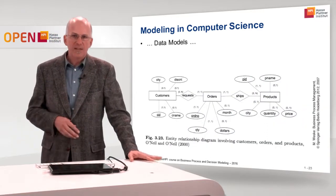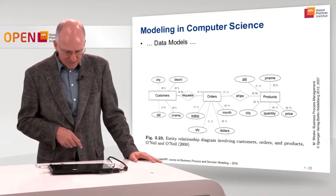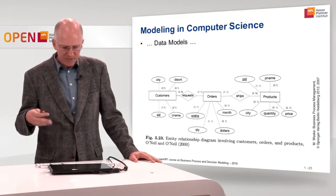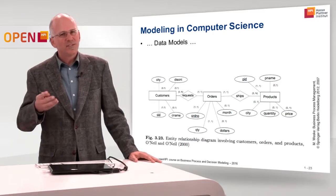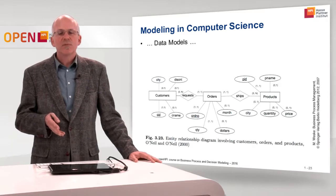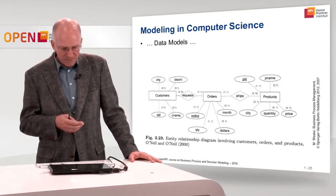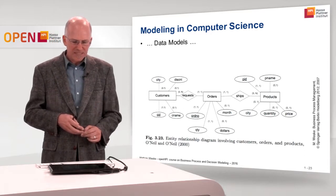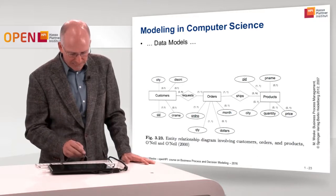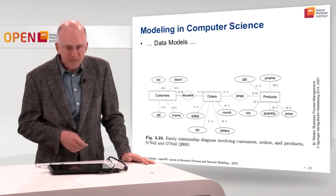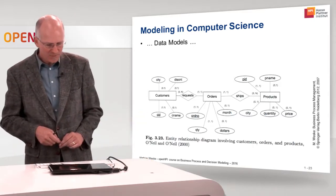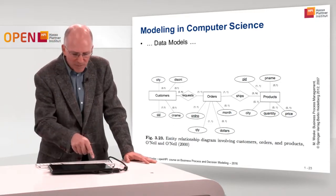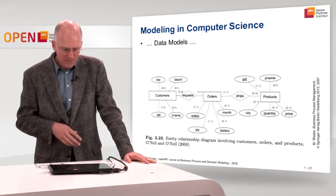Data models are also widely used in computer science. Here we have an entity-relationship diagram with cardinalities, showing entities of the real world — customers, orders, and products — and their relationships. The original is the data itself. The abstraction is clear: a complex real-world customer is abstracted to an entity with attributes for city, discount, customer name, and customer ID. All other aspects of the customer are abstracted away, and the pragmatic feature holds since the real-world customer can be substituted by this entity type and its relationship to orders.